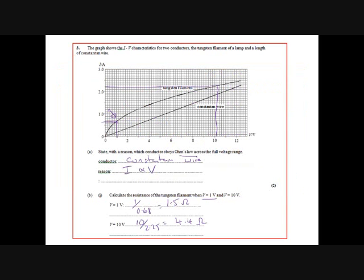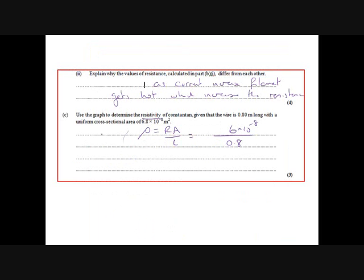So if we go back to here, you can pick any value you like, but let's go on 10 volts again. So 10 volts for the constantan wire, we get about 1.8 ohms, sorry, 1.8 amps. So the resistance is V over I.